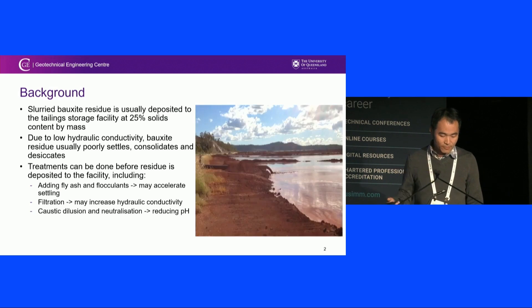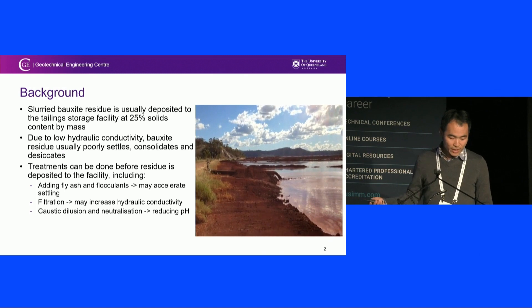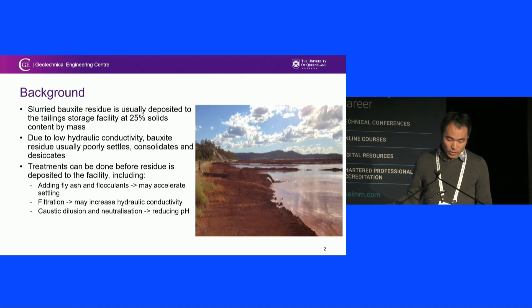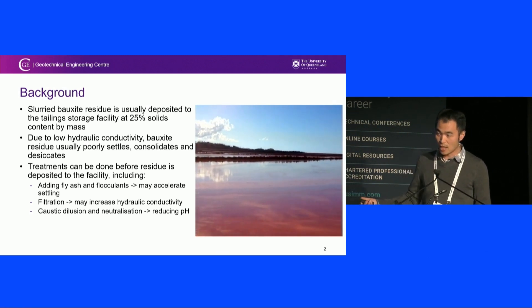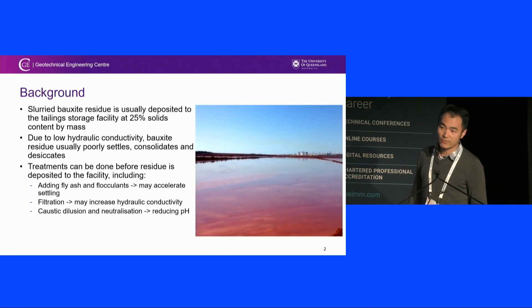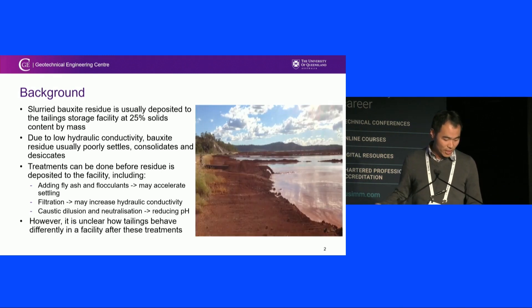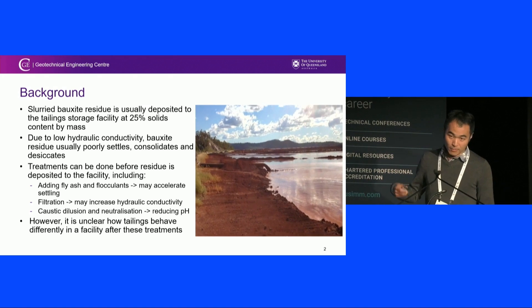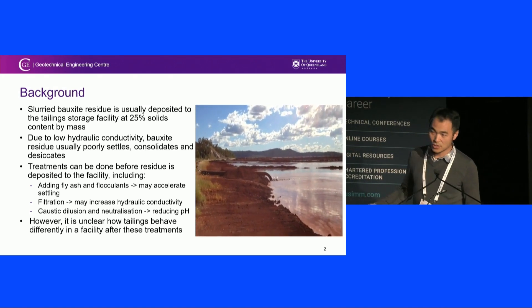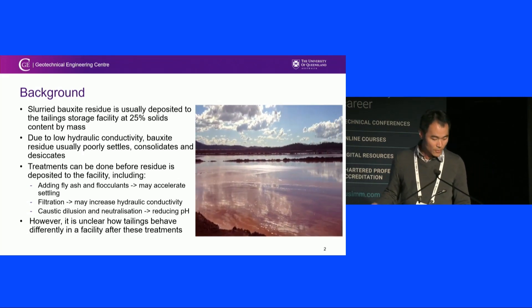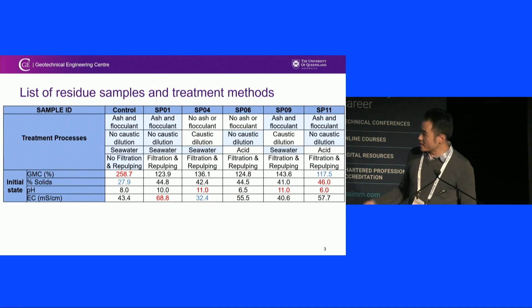The final thing is that the bauxite residue is relatively alkaline, so it has to be either diluted or neutralized, which could potentially reduce pH. But does it change the geotechnical or hydrological behavior? We don't know. So the scope of the project is to basically understand how the combination of these physical and chemical methods may change the behavior of the residues.